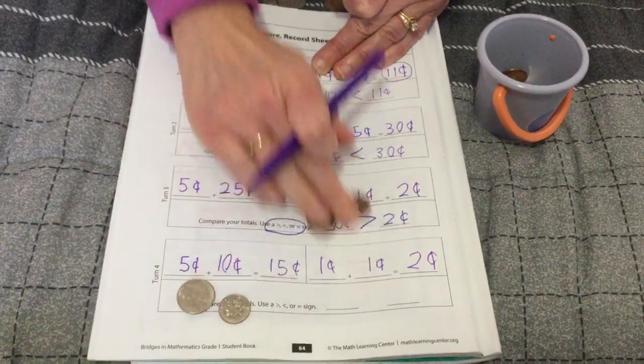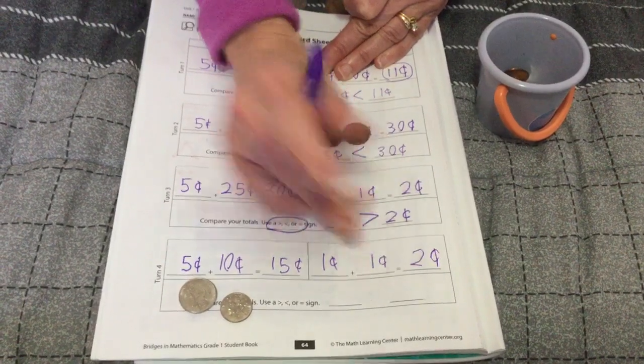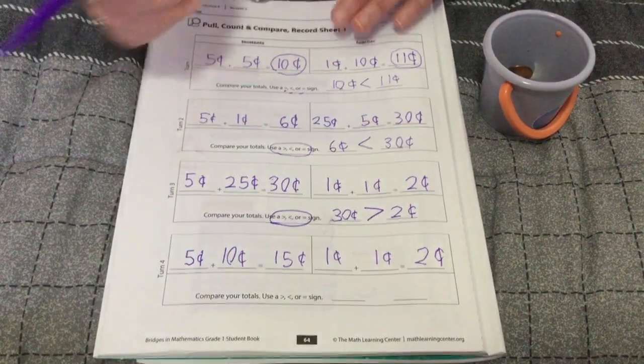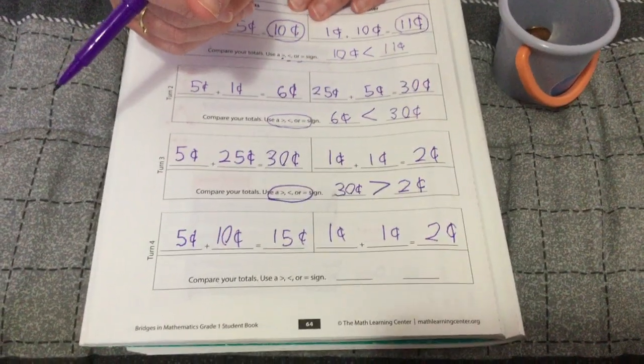You do it on your own. Go ahead and write the numbers on the two lines and then compare them. Pause the video until you are done.